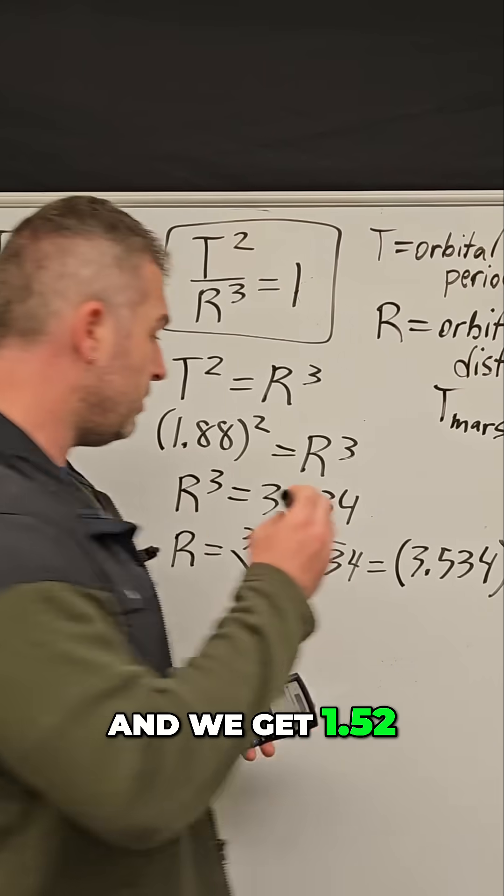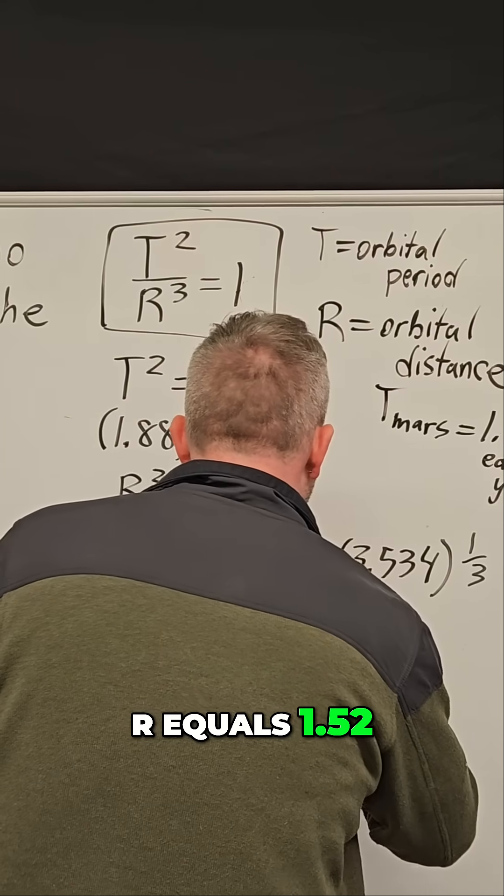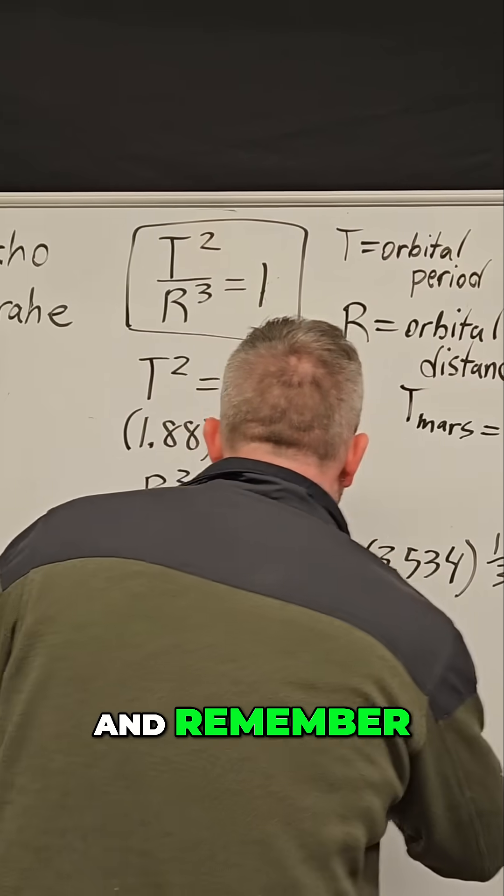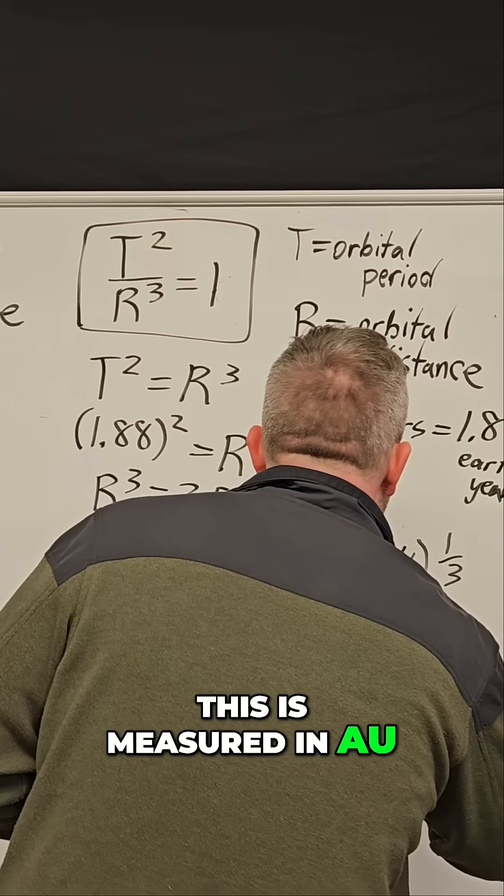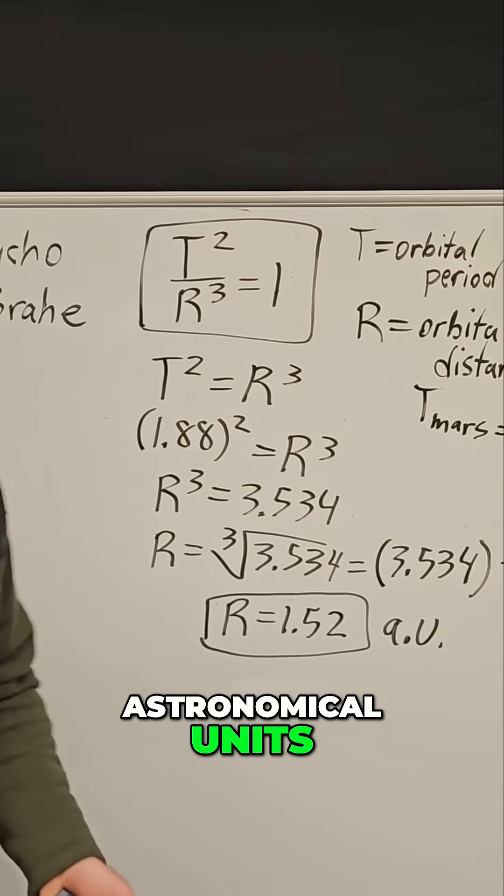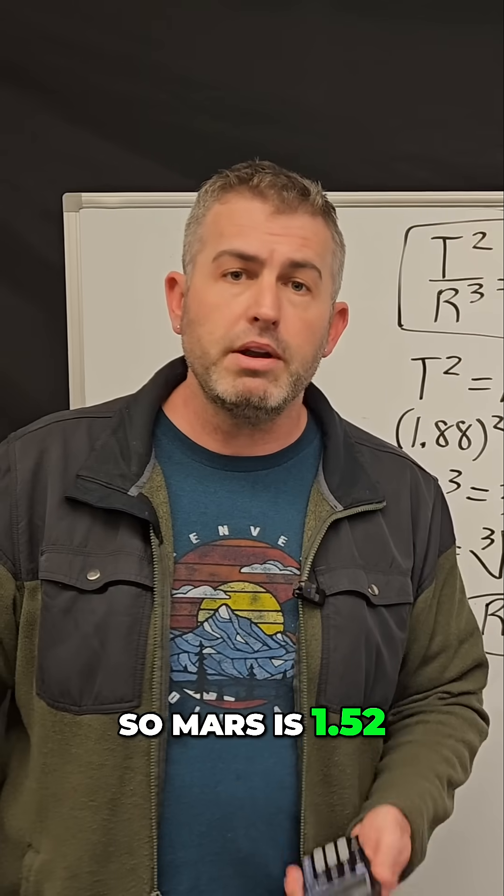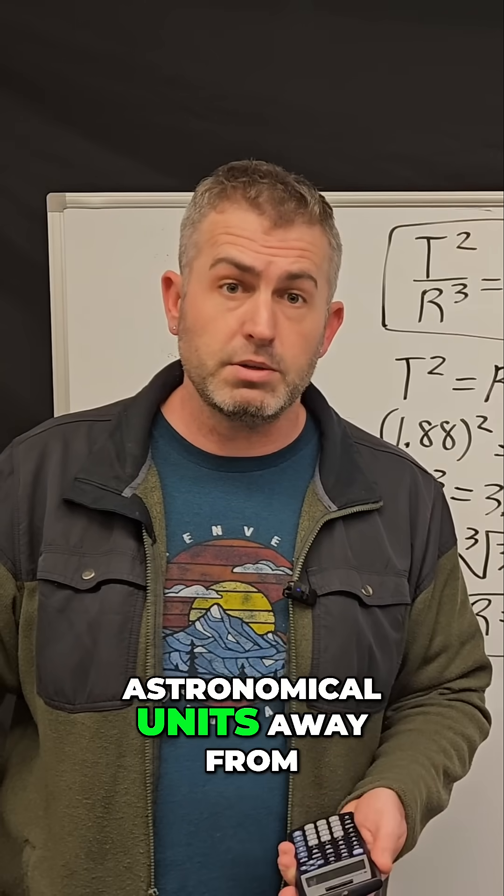And we get 1.52. R equals 1.52. And remember, this is measured in AU, astronomical units. So Mars is 1.52 astronomical units away from the sun.